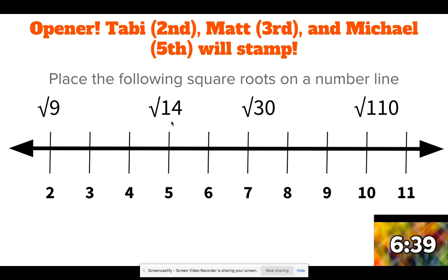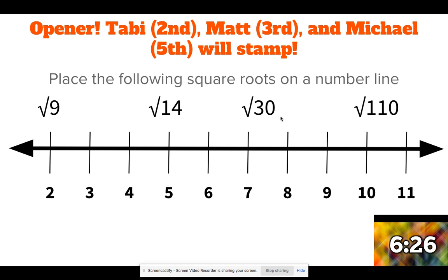What's the perfect square closest to 14? Well, 4 times 4 is 16, and 3 times 3 is 9, so this one will go right below 4. What's the perfect square closest to 30? Well, 5 times 5 is 25, and 6 times 6 is 36, so I would probably put it right in between 5 and 6.